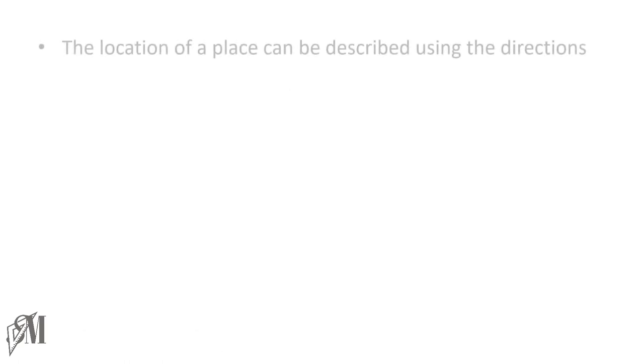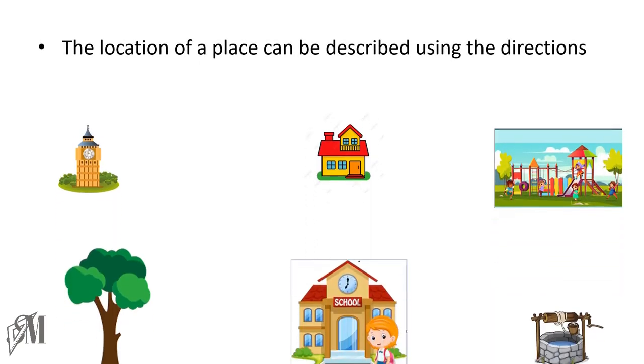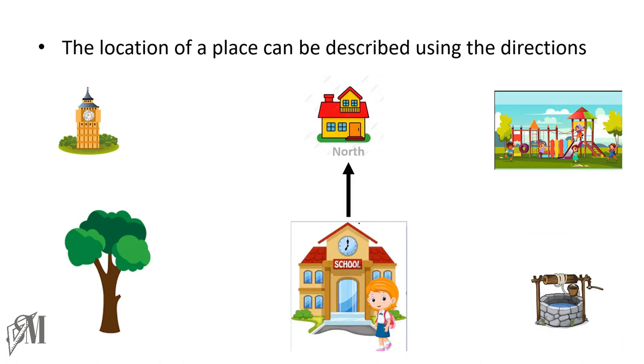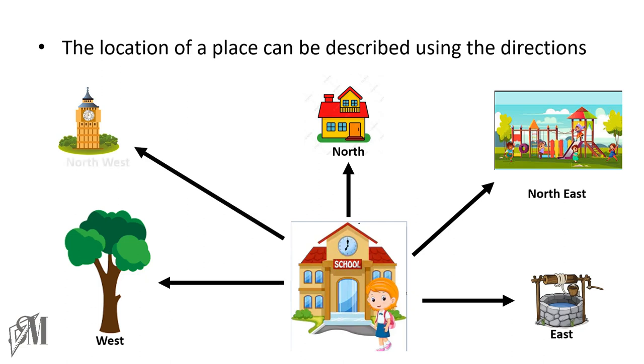The location of a place can be described using the directions as you all have learned in small grades. Look at this picture here. With respect to the school, we can describe the location of other places. The house is in the north of the school, the well is in the east of the school, the clock tower is in the northwest of the school, and so on. Likewise, directions can be used to describe locations.